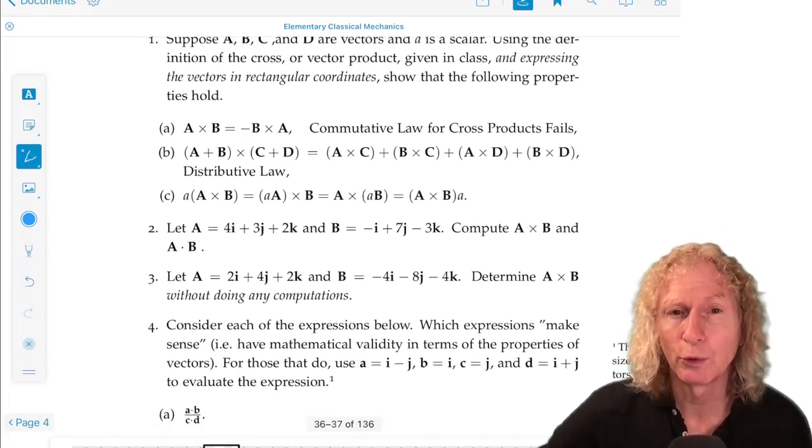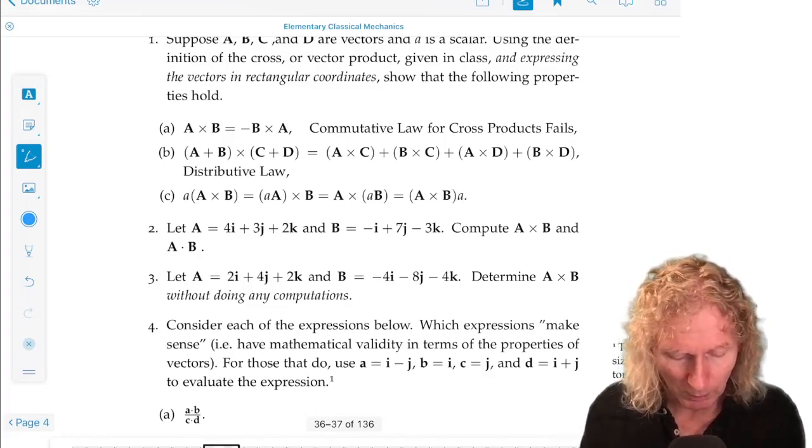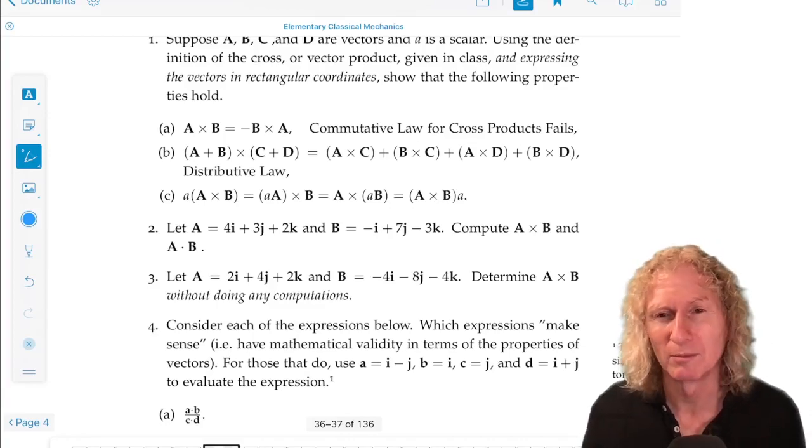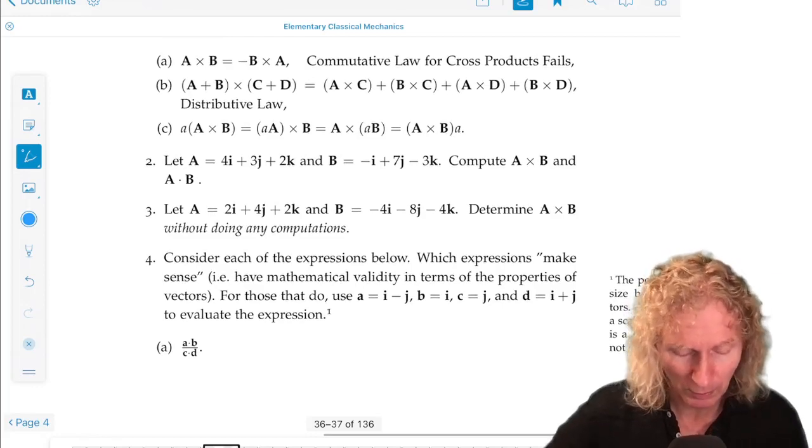Problem 2, I give you two concrete vectors, explicit vectors, and I ask you to compute A cross B and A dot B. It should be easy, but it's important that you verify that you can do that.